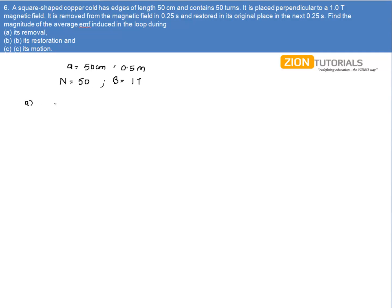During removal, the initial flux passing through the square loop is given by N into B into A, where N is number of loops, B is magnetic field, and A is area of the loop.